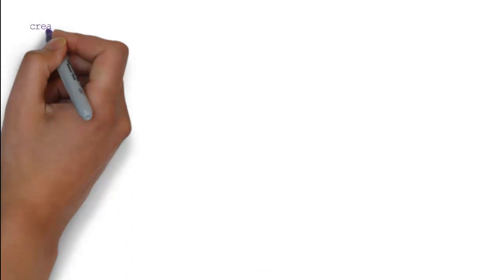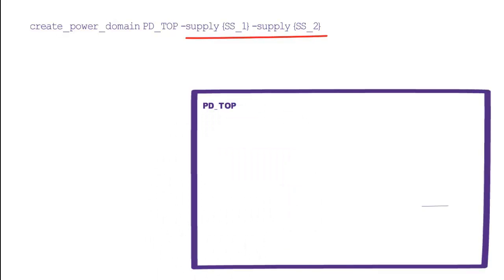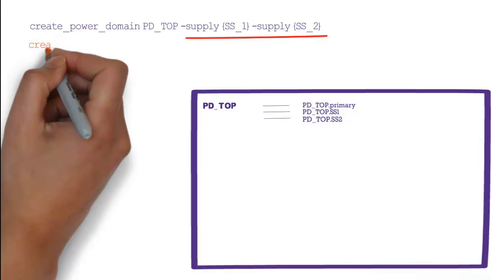Let's see an example. We create power domain PD_TOP with additional handles SS1 and SS2 using supply argument. PD_TOP now has PD_TOP.primary, PD_TOP.SS1, and PD_TOP.SS2 handles. Next, we create power domain PD_A on elements A. This will create PD_A.primary supply as per the rule.